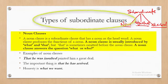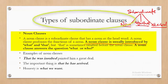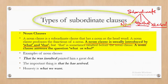A noun clause behaves like a noun — it performs the function of a noun. Noun clauses are usually introduced by the words 'what' and 'that.' For example: 'That he was insulted pained him a great deal.' Here, 'that he was insulted' is the noun clause. Another example: 'That she left her husband is known to all her friends' — here 'that she left her husband' is the noun clause performing the function of the subject.